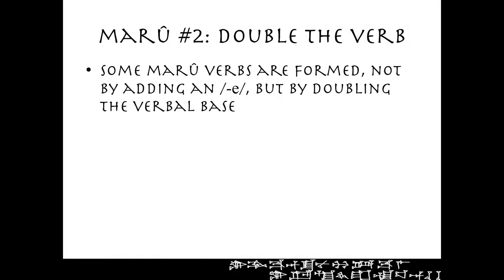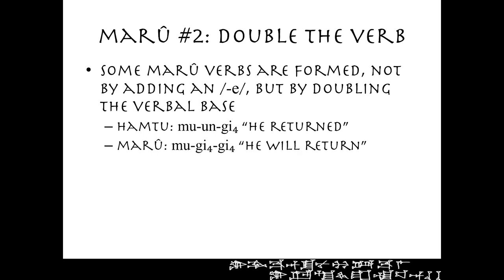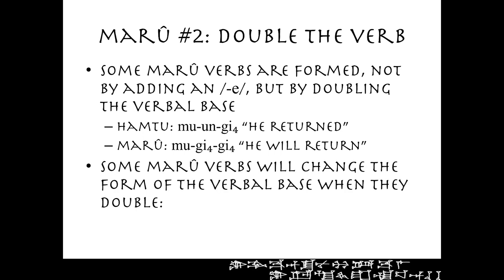Some maru verbs are formed not by adding that E at the end, but by doubling the verbal base. So in the hamtu, mu-un-gifor — gifor means 'to turn or to return' — mu-un-gifor would be 'he returned.' However, in the maru they would say mu-gifor-gifor: 'he will return' or 'he returns.' Notice that the shape of the verbal base didn't change — it's gifor in both hamtu and maru; the maru just doubles it.